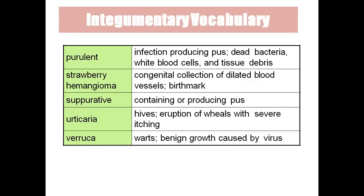Suppuration occurs when any injury contains pus. Urticaria — if a person has an allergy with severe itching, after itching you can find reddened spots, which we call urticaria. Verruca is benign growth caused by a virus. Cyst is any fluid-filled sac present under the skin. Fissure is any crack-like lesion on the skin, usually seen in people who wash clothes and utensils continuously.